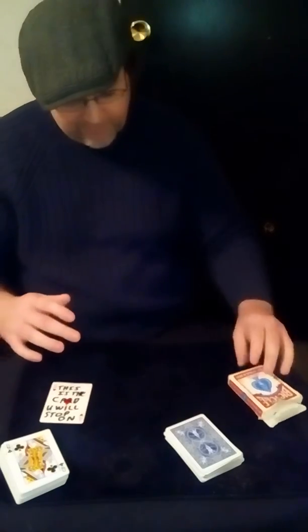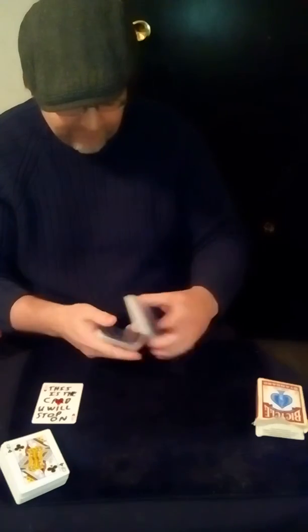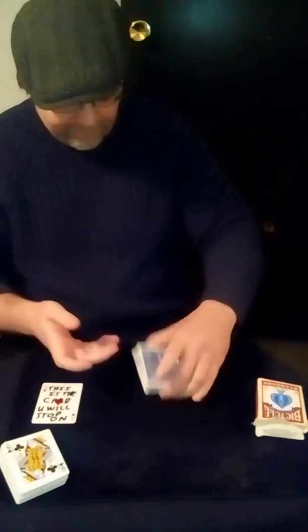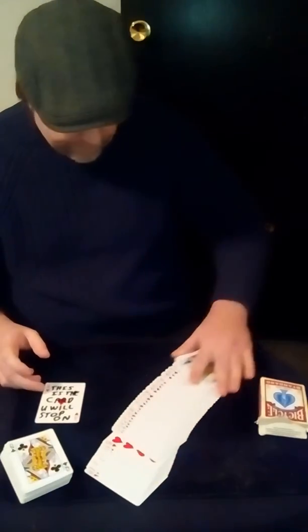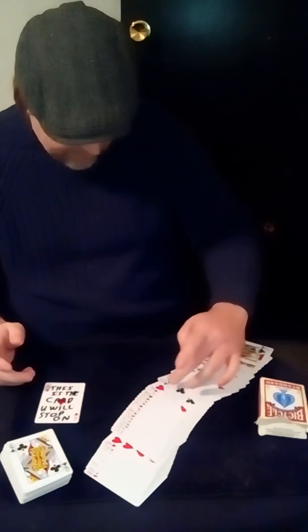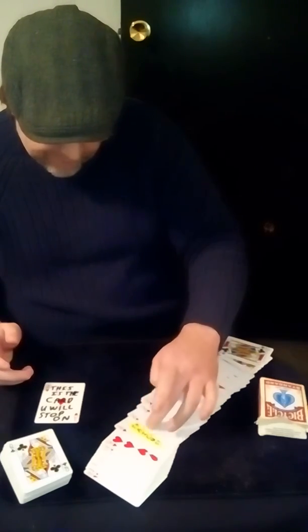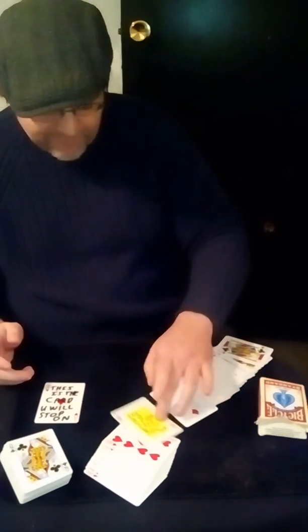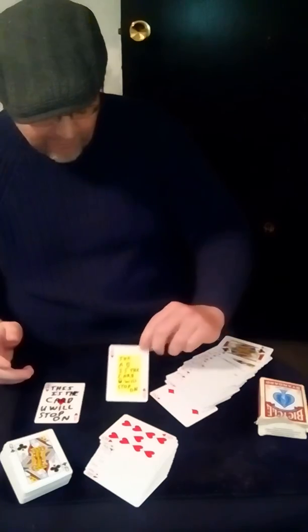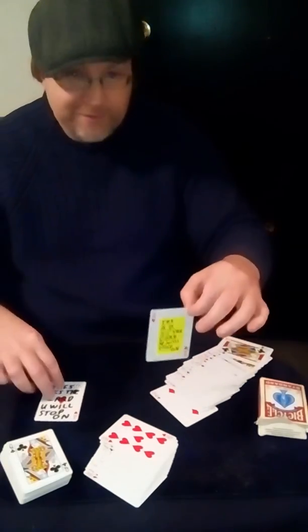Which is weird because if I go back to the original deck and I spread the cards out and I find the ace of hearts. Let me find it here. Somewhere. There it is. Look what it says. The ace of hearts is the card you will stop on.